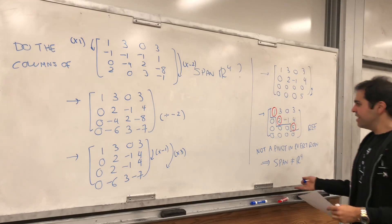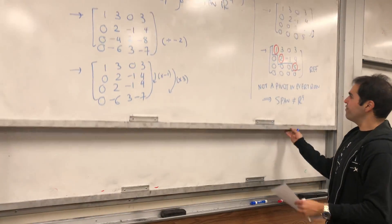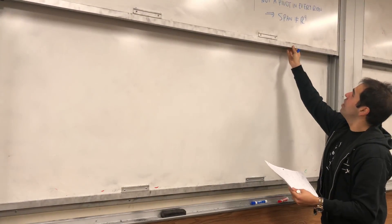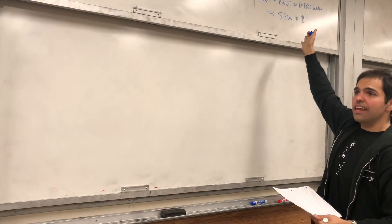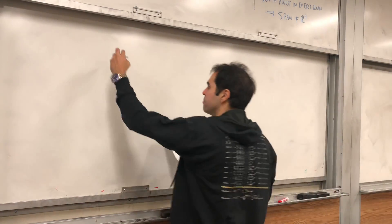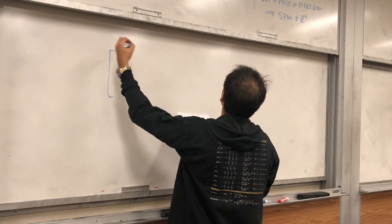And it turns out automatically, from that, you can conclude that the span is not R4. And the reason is, basically, if there's not a pivot in every row, it means the last row has a bunch of zeros.